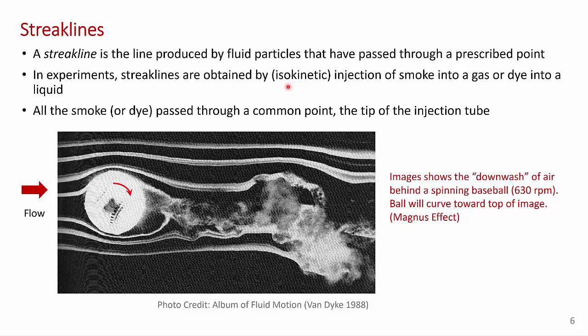So what I've shown below is an example of using streak lines. You can see smoke is being injected at multiple points upstream of a baseball in a wind tunnel. And the baseball is rotating at about 630 RPM. So each one of these lines here of smoke is a streak line. It's a streak line because all the smoke is passed through a prescribed point at the tip of the smoke injection tube. So that's a good way to think about streak lines.